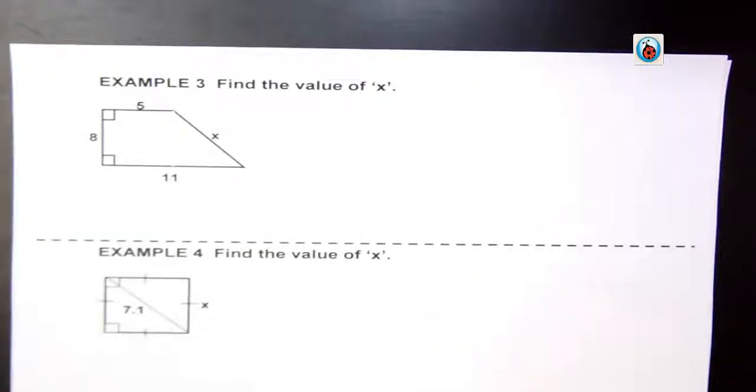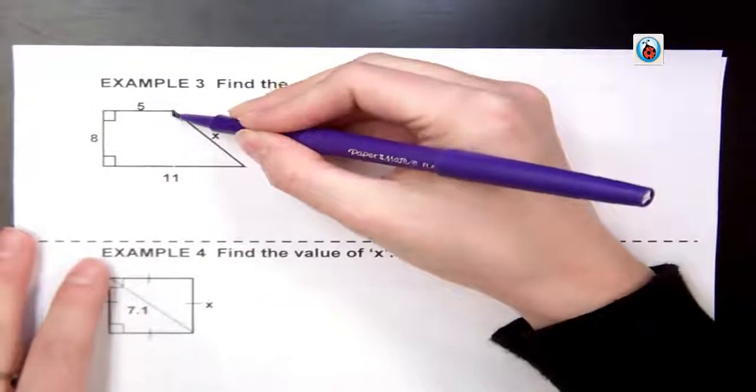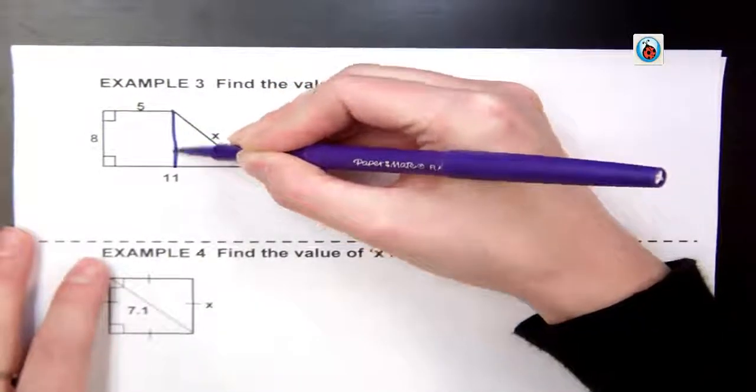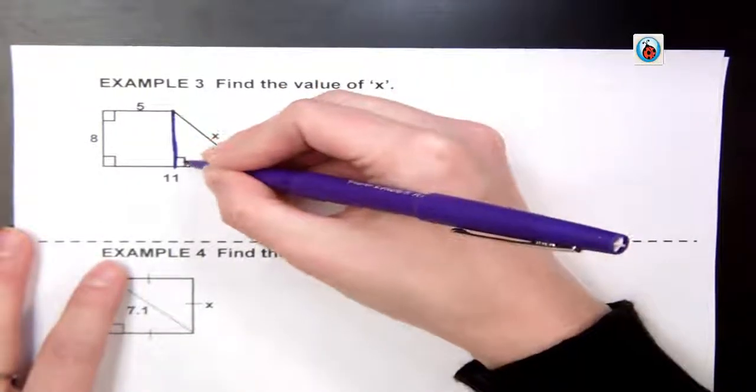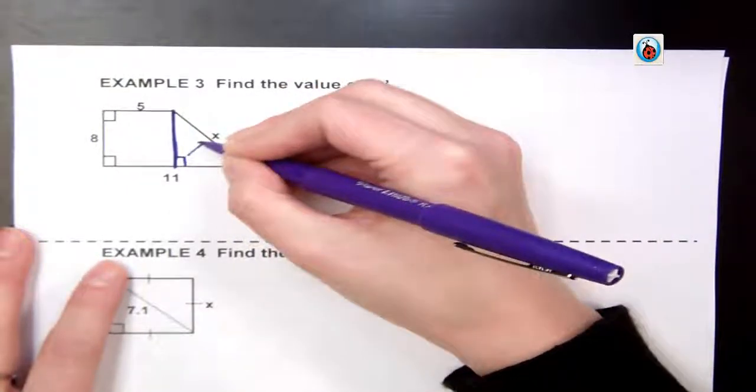On example 3, that's a shape that is not a triangle. So the first thing we have to do, since we're dealing with triangles this unit, is draw the line that will make it a triangle. If I just finish out my square here, recognize this is my right angle, that makes the x the hypotenuse.